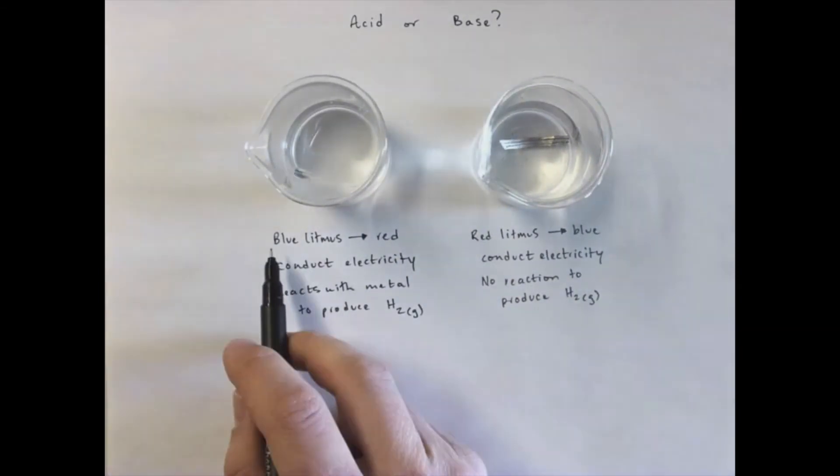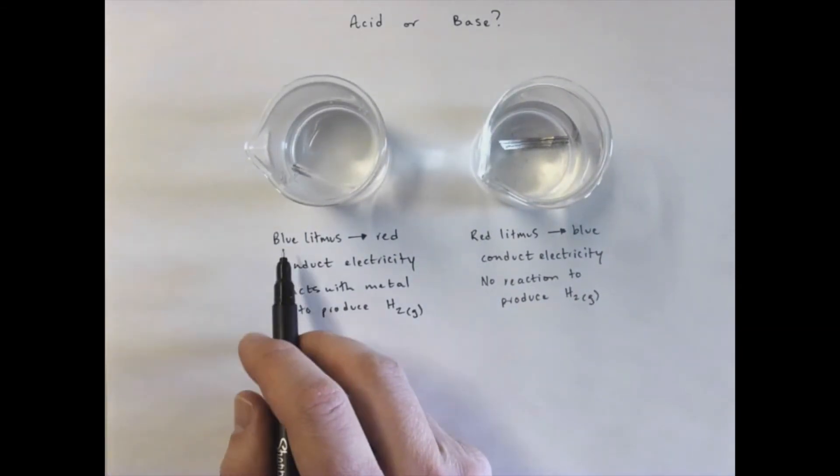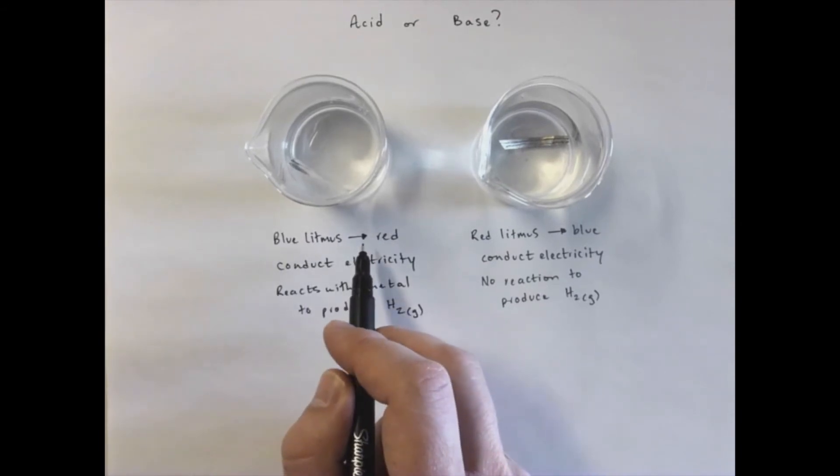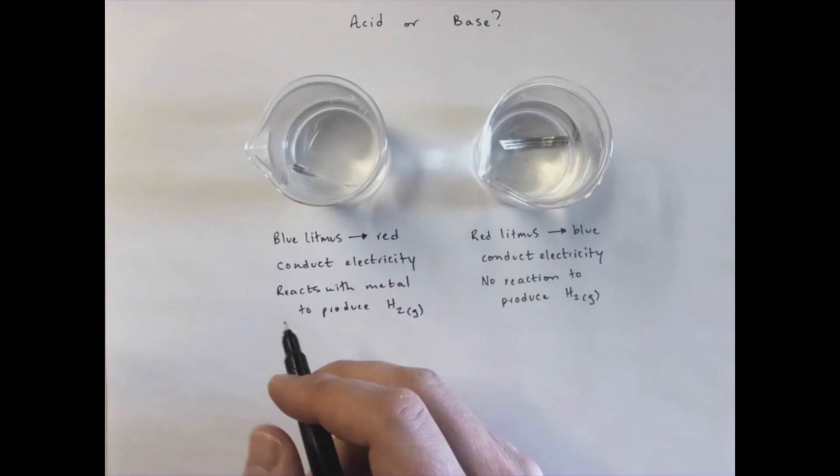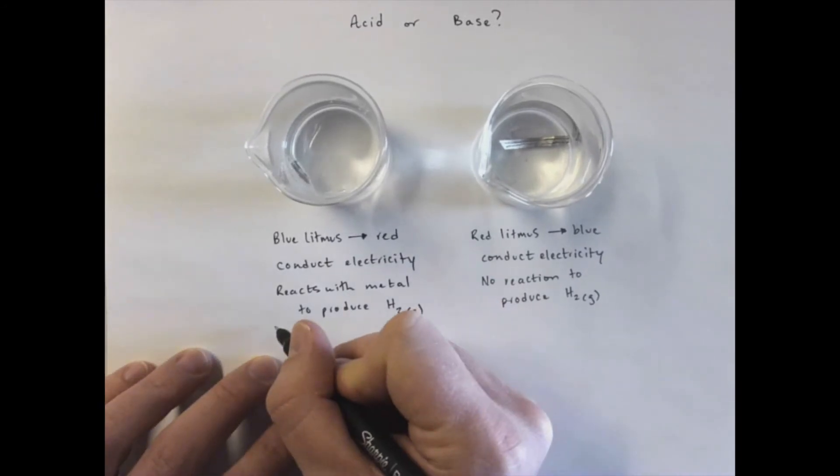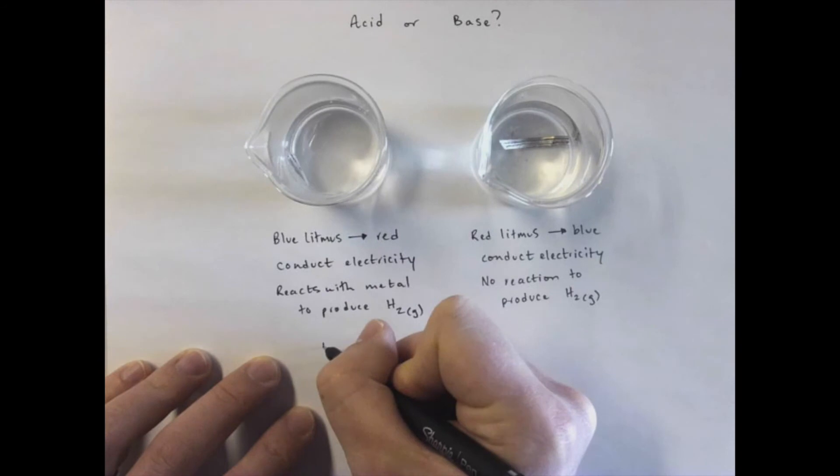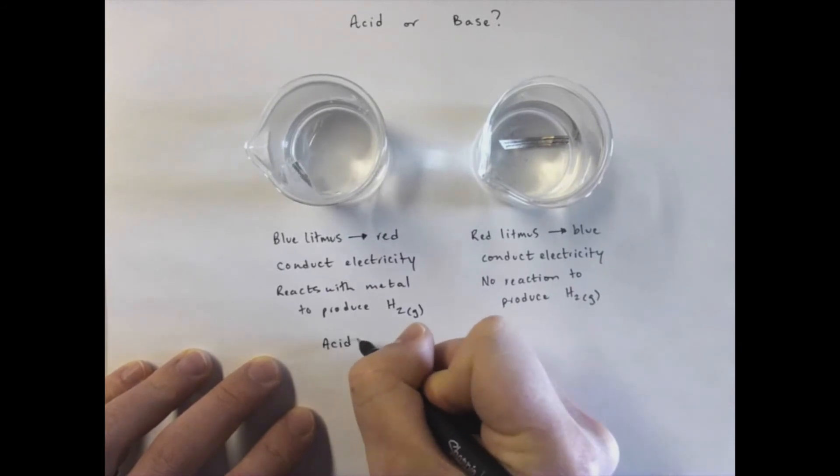So just by looking at this data here, blue litmus paper going red, conducting electricity, and it reacts with metal to produce H2. This is what we would use to empirically define an acid.